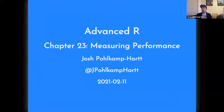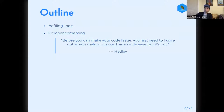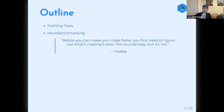Today we're going to be talking about measuring performance — not actually improving your performance, but measuring it. Two areas we're talking about are profiling and micro benchmarking. Hadley has this quote that before you can make code faster, you should figure out what's making it slow. It sounds easy, but it's not. It can be easy to find the slow code sometimes, and not easy other times, depending on the scale of what you're doing.